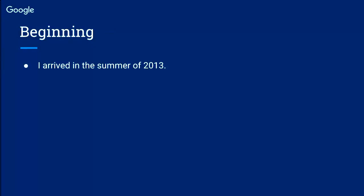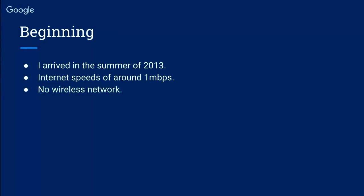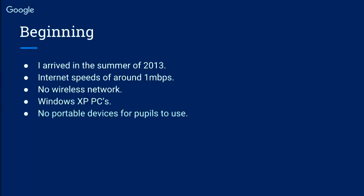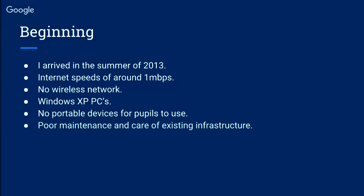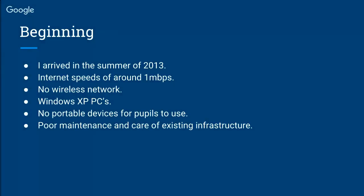When we first started this journey with Google, it was in the summer of 2013 — about four years ago. At Han Cross, there was only internet speeds of about one megabyte per second, no wireless network or infrastructure at all. All the PCs were Windows XP, and there were absolutely no portable devices for pupils to use — no laptops, tablets, or anything. There was only one IT suite in the whole school, and there was a lot of poor maintenance of the existing infrastructure.